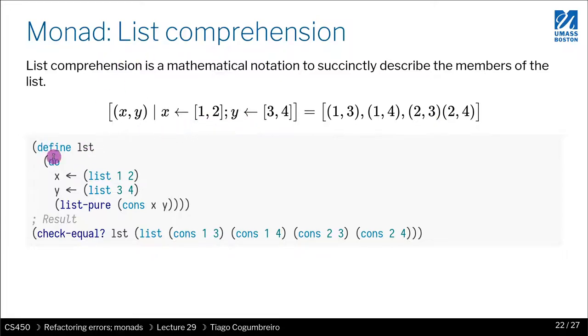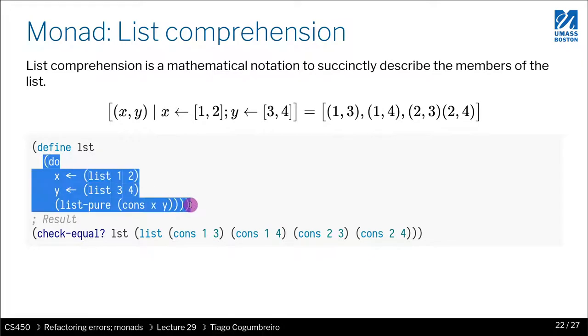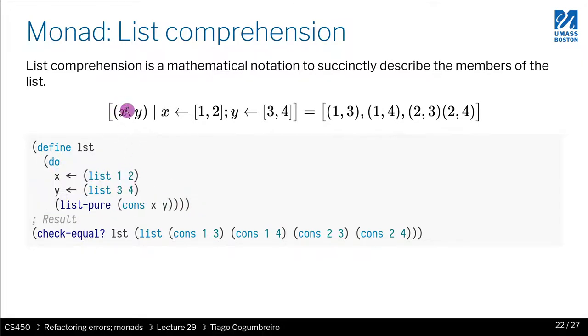So the monadic syntax for that is very close to what we wrote here mathematically. We do a bind. We assign to x to be the result, so it's for each x in 1, 2, and for each y in 3, 4. Return. You can think of this as return as well. So actually in some papers the pure operator is known as return. Return the pair x, y. And the pair we write with cons.